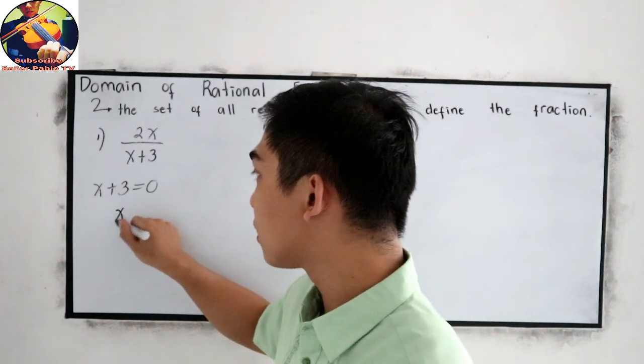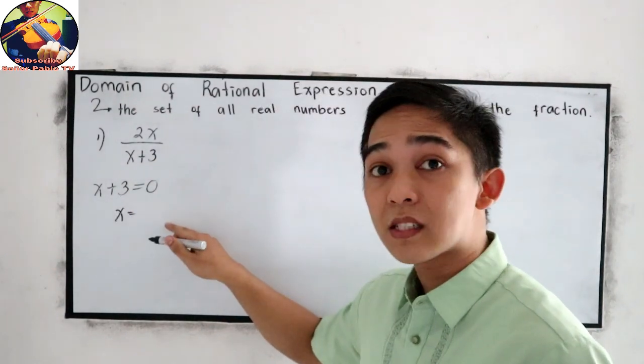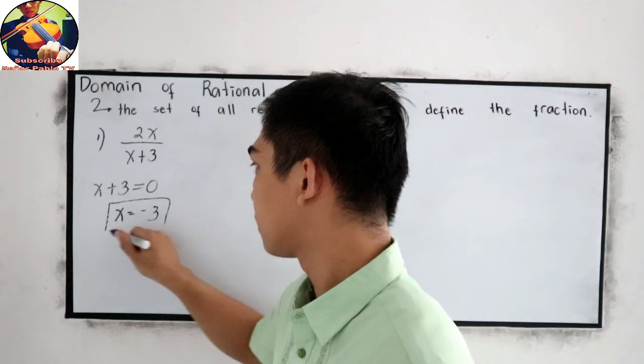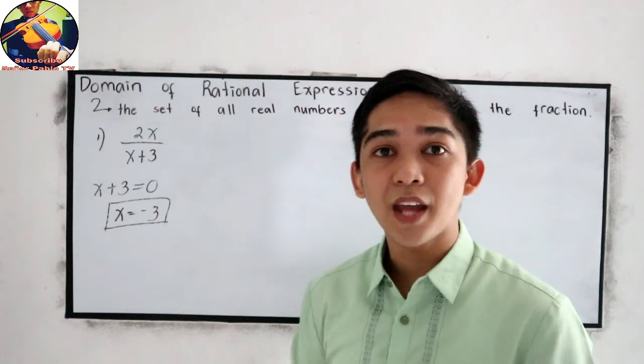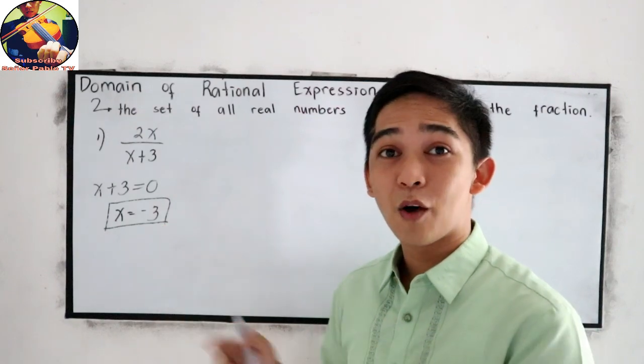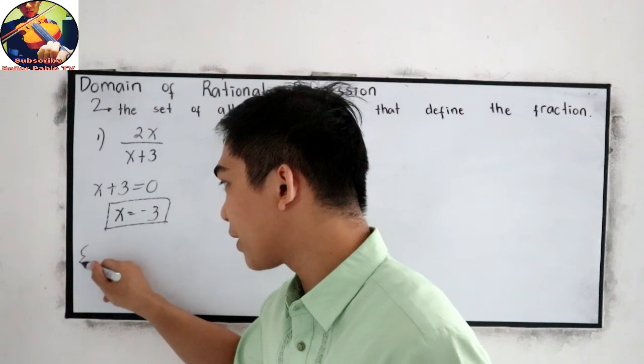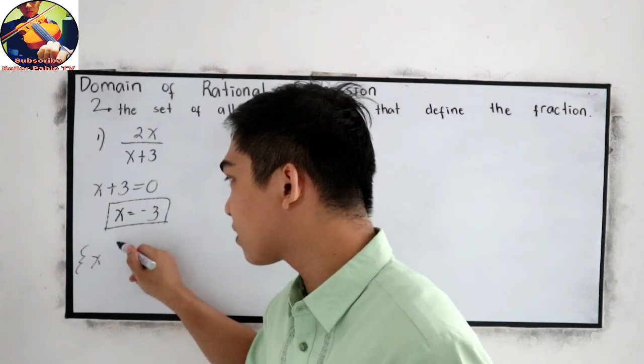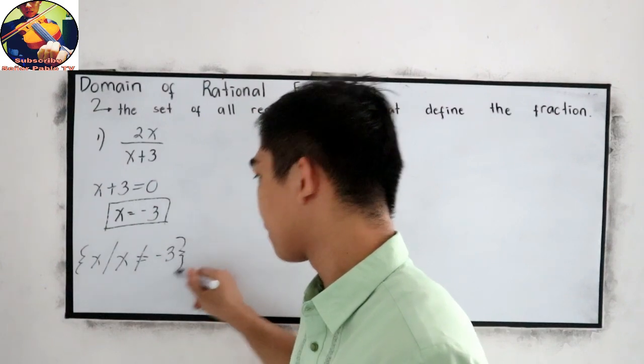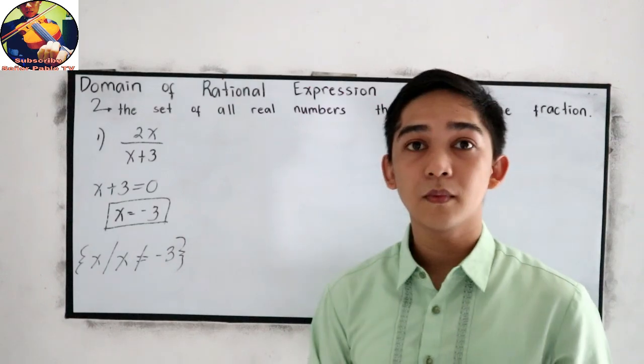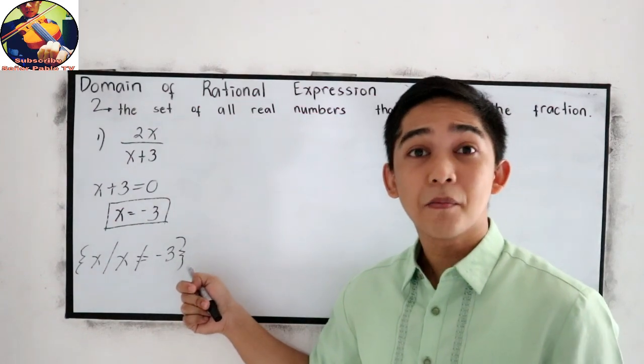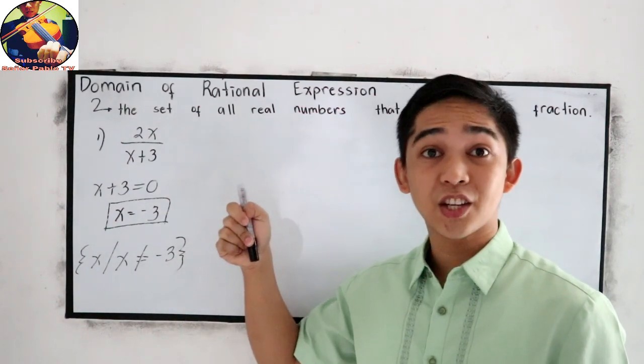So x is equal to transpose positive 3, that will become negative 3. So our restricted value now is negative 3. So for our final answer, our domain is x such that x is not equal to negative 3.